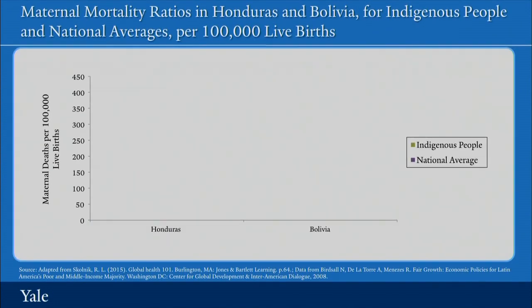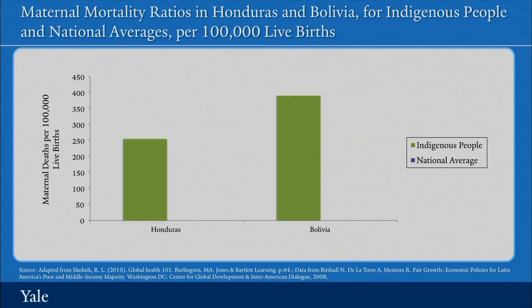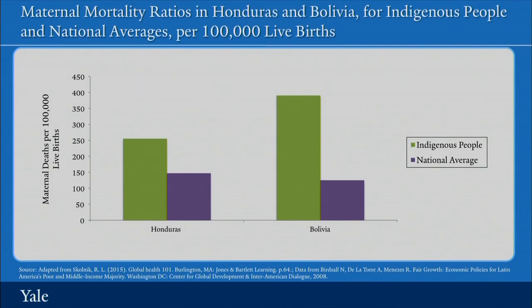There are also important ethnic differences. This graphic looks at maternal mortality ratios in Bolivia and Honduras over a certain period, comparing the maternal mortality ratio for indigenous people with the ratio for the country as a whole. We would predict that indigenous peoples would have higher maternal mortality ratios than the average or non-indigenous population — and indeed, in both countries, that is exactly what we see. One of our goals is to ensure that whether in Bolivia, Honduras, or the country in which we live, such disparities along ethnic lines are reduced.